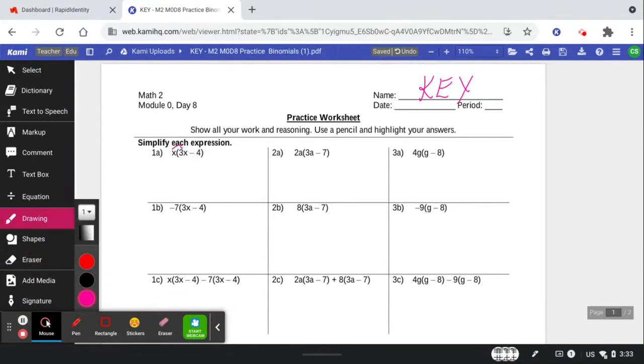So x times 3x. See how I got the 3x squared? And then x times negative 4. That's it. They're just asking us to simplify so we're done. 2a times 3a. This time we're going to multiply the numbers to get 6, and then a times a is a squared. You okay with that? And then 2a times negative 7. There's my negative 14a. We're done.